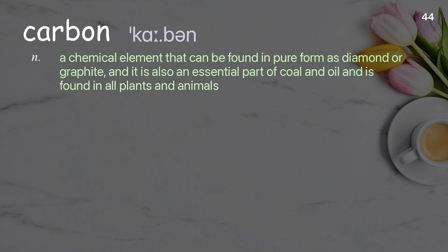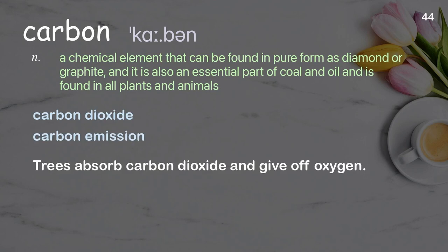Carbon: a chemical element that can be found in pure form as diamond or graphite; it is also an essential part of coal and oil, and is found in all plants and animals. Examples: carbon dioxide, carbon emission. Trees absorb carbon dioxide and give off oxygen.